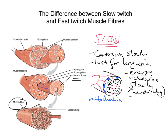So in this slow twitch muscle fibre, you get energy released slowly, aerobically, with lots of blood vessels and lots of mitochondria around the outside, and they last for a long time. Slow twitch muscle fibres are also rich in myoglobin, which you might relate to haemoglobin that carries oxygen in red blood cells. Myoglobin is a red colour protein designed to store oxygen.